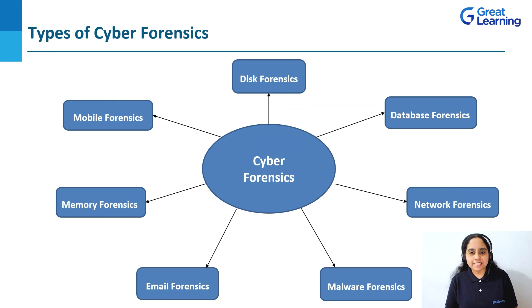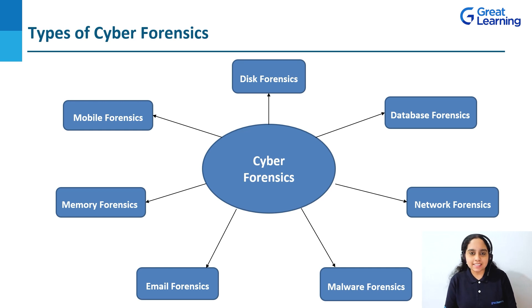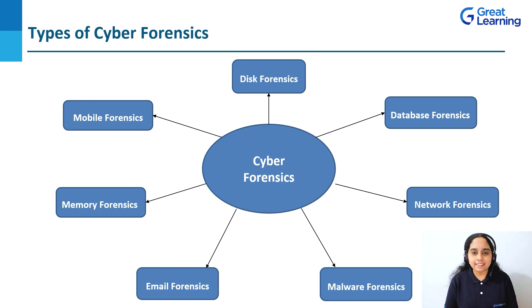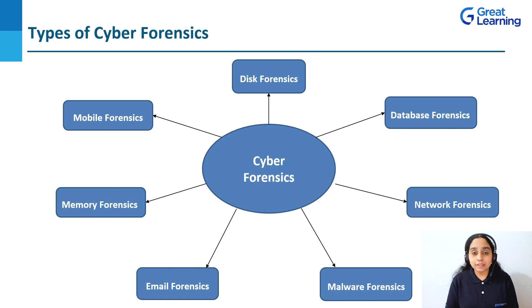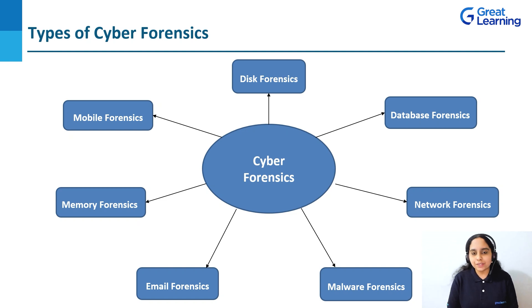The fifth type is email forensics, which is the process of investigating emails related to a criminal case. It involves recovery of deleted mails as well. The sender and receiver details along with the date and time are also investigated and analyzed. The sixth type is memory forensics, which is the process of investigating and analyzing forensic information in a computer's memory dump. A memory dump is a storage location where the system stores a memory backup in case of a system failure. The last type is mobile forensics, which is the process of retrieving evidence related to a criminal case from a mobile SIM card, SMS, MMS, audio, video, etc.